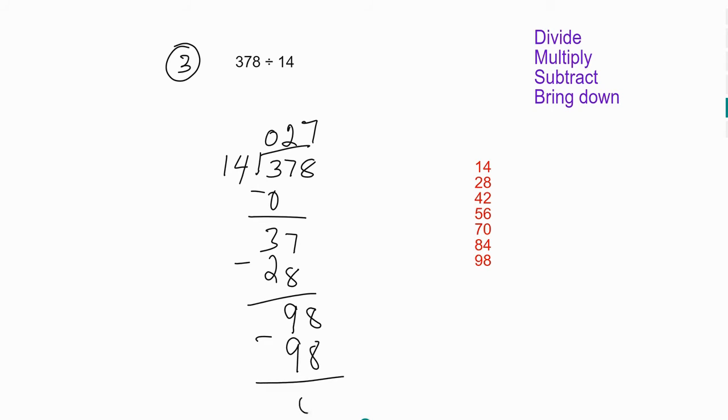So 98 minus 98 gives you zero. Three hundred seventy-eight divided by 14 will give you 27. So again, you can just cancel out the zero.